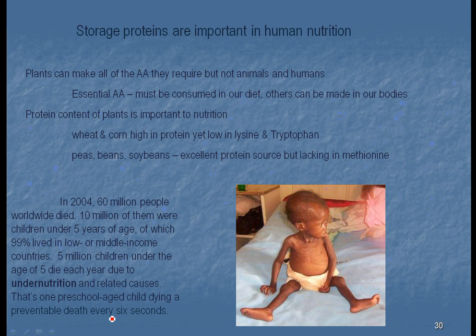In 2004, 10 million kids under the age of 5 died because of undernutrition. Here's an example of a child who doesn't look too bad, looks a little skinny, but he's actually dying because he doesn't have enough protein in his diet. We can solve that with new techniques of farming and growing. We can solve the problem of malnutrition.